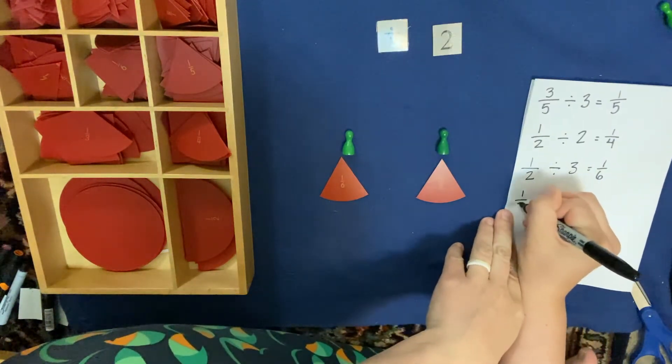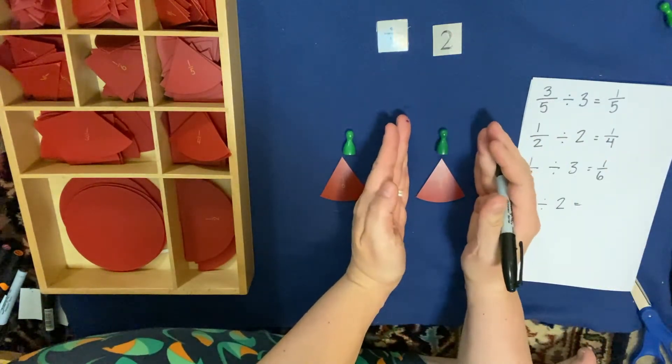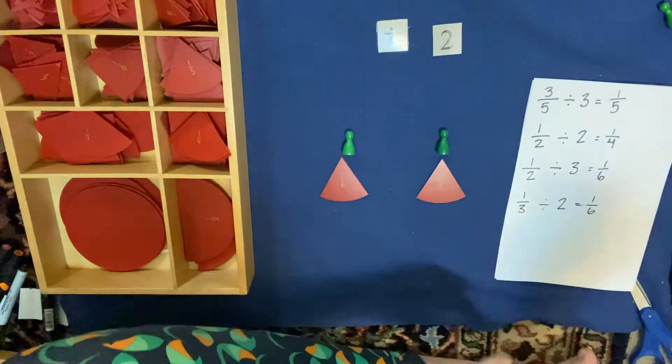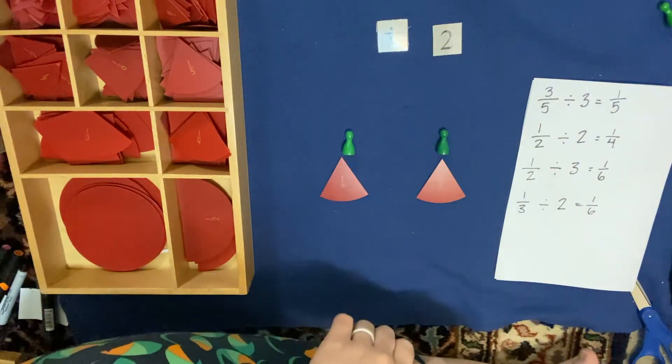So 1/3 divided by 2 equals, how much did 1 Skittle get? 1/6. Oh, look at that. Got the same answer twice in a row. Okay, so that's division.